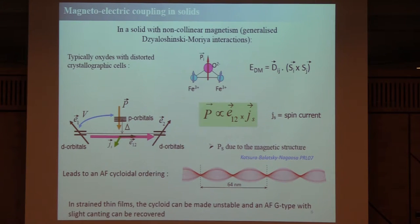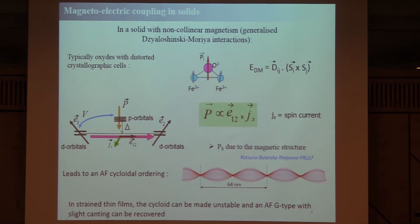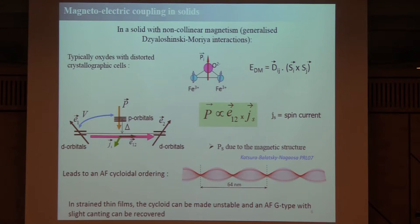Importantly for this work, you can destabilize and kill this cycloid. One way is to apply a very large field, but an easier way is to strain the film. If you grow BFO on a strained substrate, for example STO, whose cell parameter is smaller than BFO, you induce some anisotropy. If the anisotropy is large enough, you make the cycloidal ordering unstable and recover a G-type antiferromagnet. This is what happens in our samples.